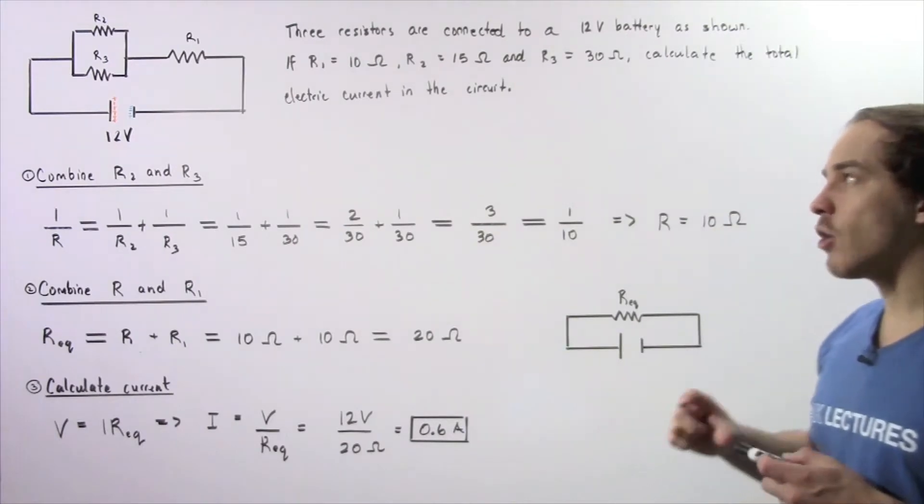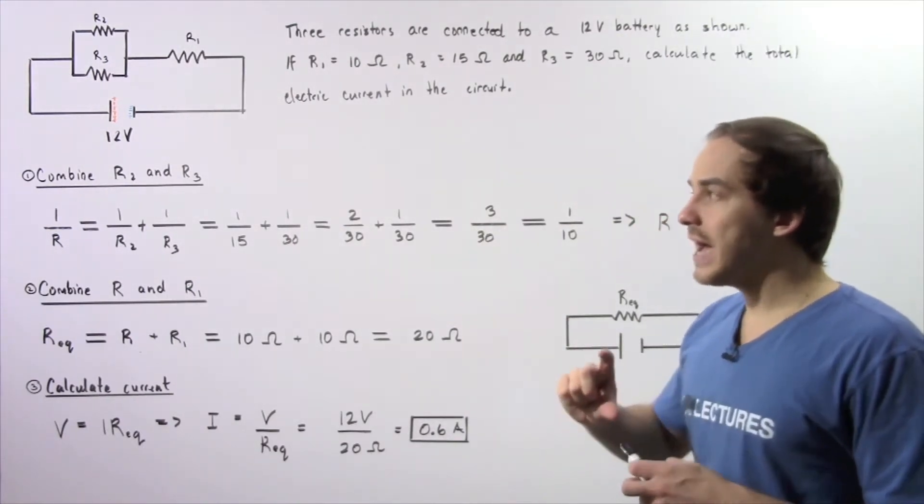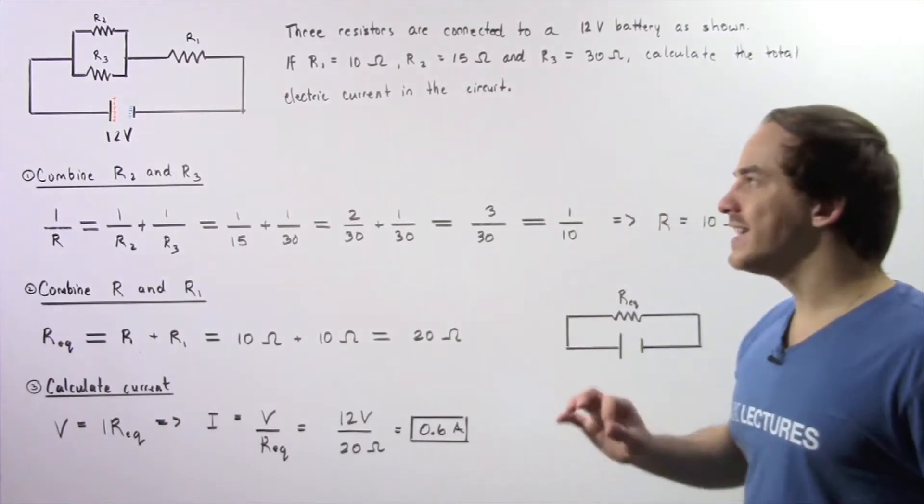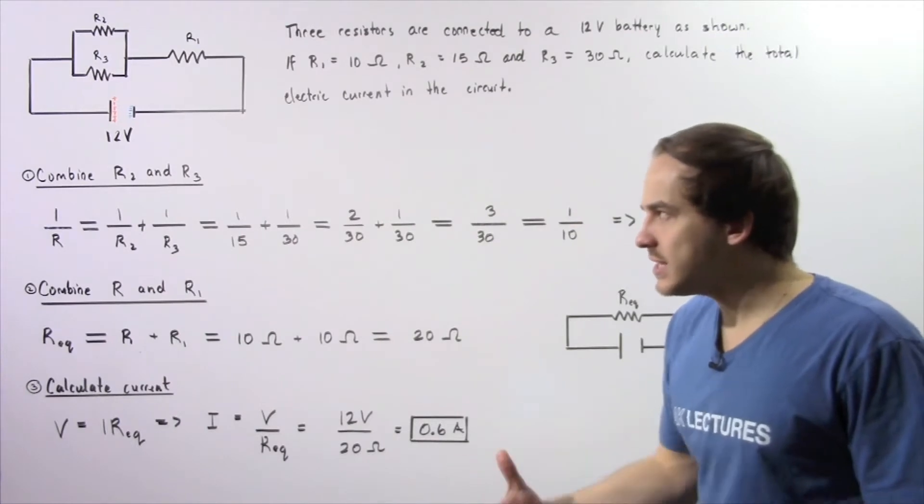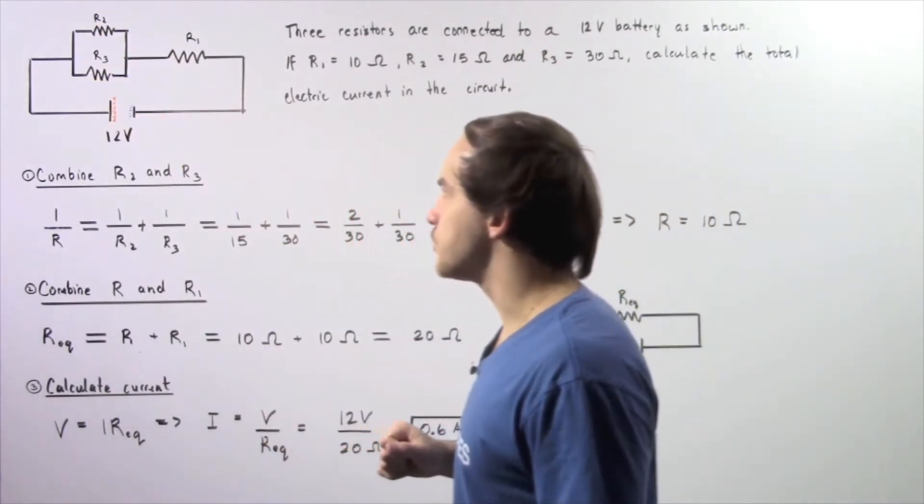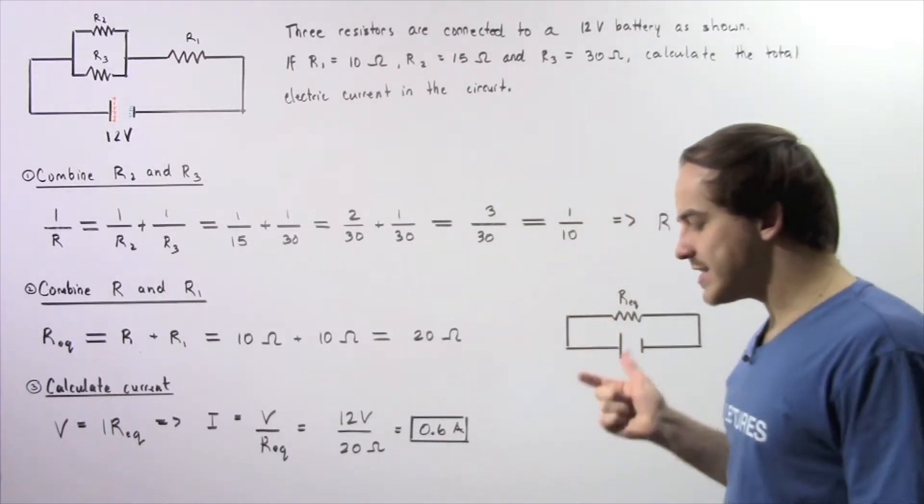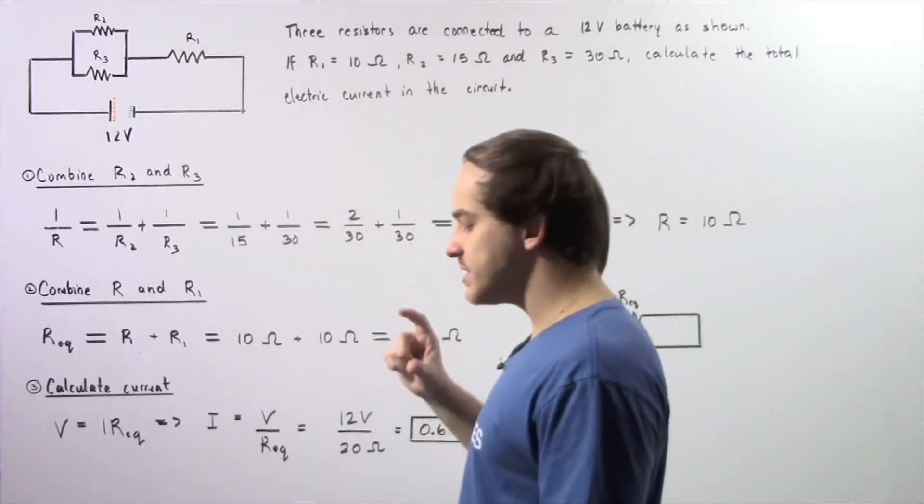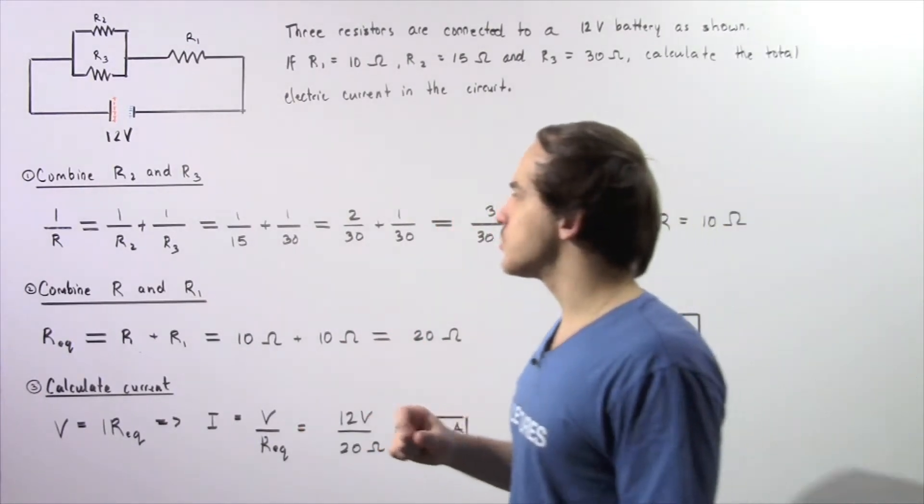So to find our current, we have to use Ohm's law. And to use Ohm's law, we have to calculate what the equivalent resistance is of that single resistor that will replace these three resistors. So let's begin with step one. In step one, we want to combine our resistors which are found in parallel with respect to one another.